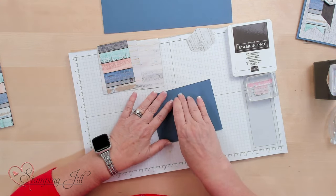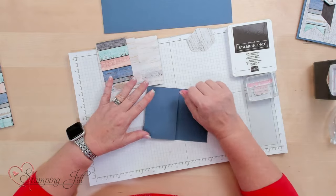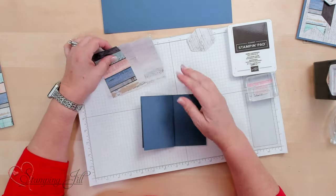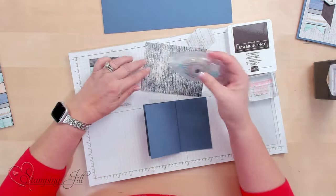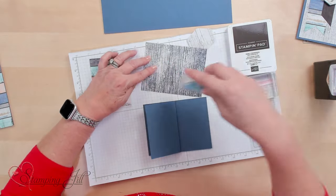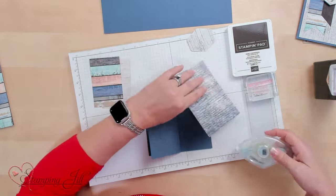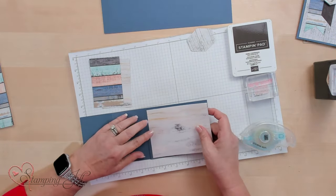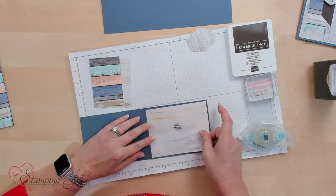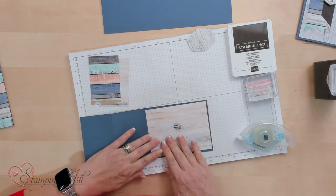You don't have to score it if you don't want to because we're going to be covering that up with this gorgeous designer series paper. This really makes it look masculine and you can decide which side you like better. This side or this side. I love how we have two sides to our paper and there's so many choices.